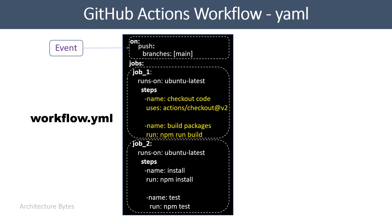The checkout code step uses a ready-made action called 'checkout', which is available in the GitHub Actions marketplace. The GitHub Actions marketplace has many such ready-made actions for common tasks — you can use one of them or write one of your own. Checkout is nothing but another YAML file in the GitHub Actions marketplace. The second step is to build packages.